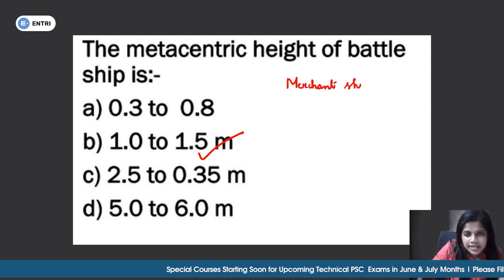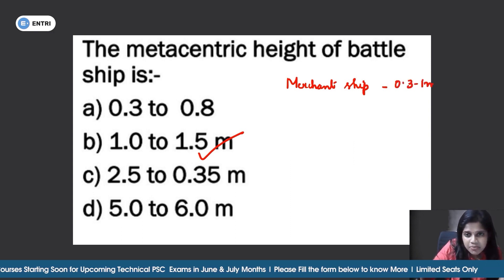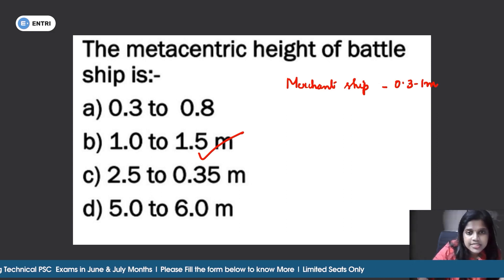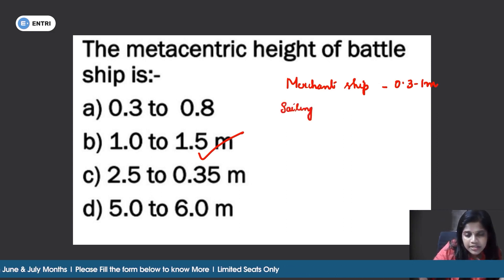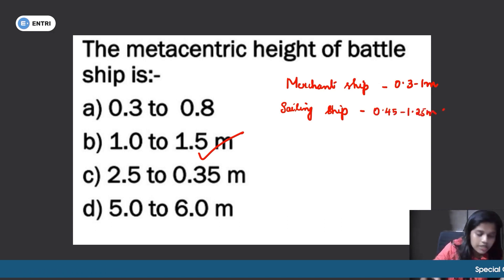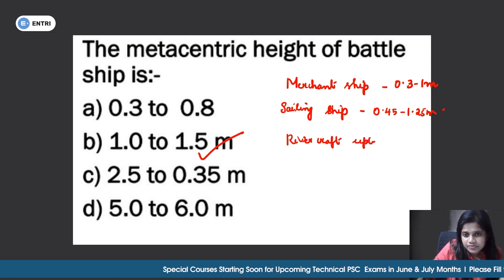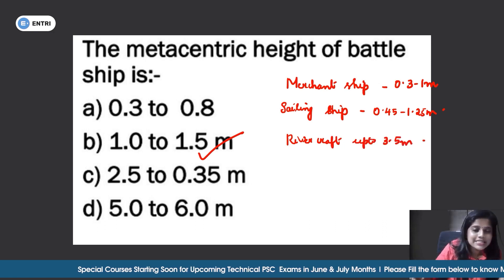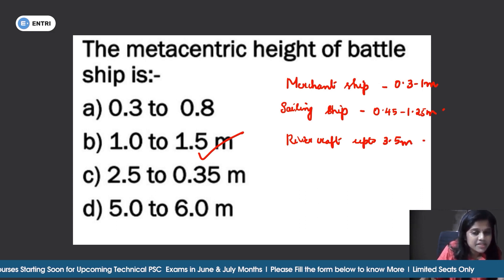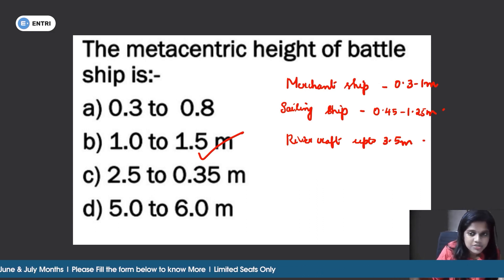For reference, metacentric height values for different ship types: merchant ships range from 0.45 to 1.25 meters, battleships are 1 to 1.5 meters, and river craft goes up to 3.5 meters. These values apply to merchant ships, sailing ships, river craft, and battleships.